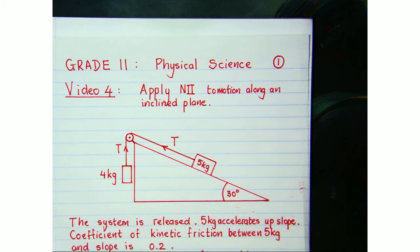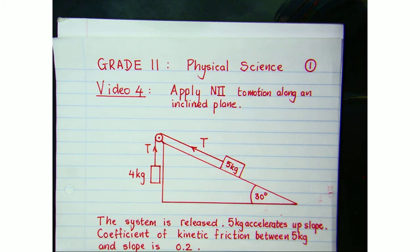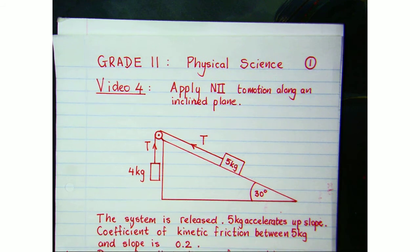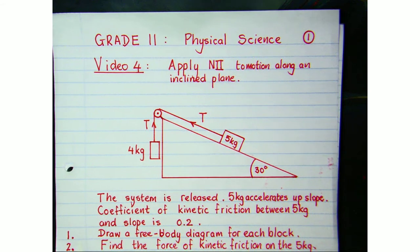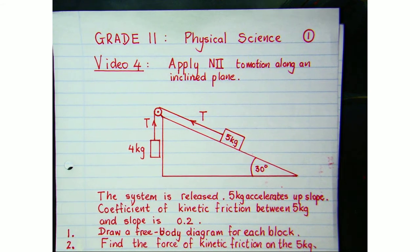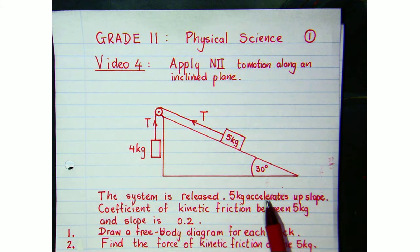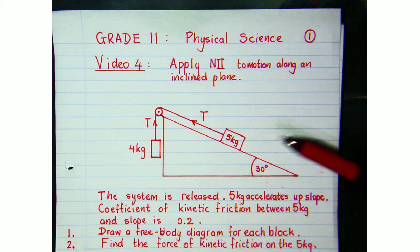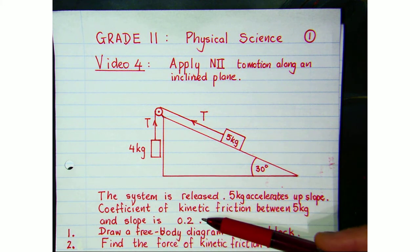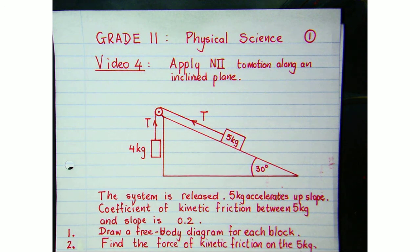Hopefully you got those free body diagrams right. For question 2, find the force of kinetic friction on the 5 kg box. The 5 kg box is sliding up the slope so kinetic friction is involved, and the coefficient of kinetic friction is 0.2. Pause the video and try question 2.